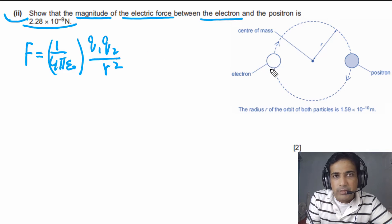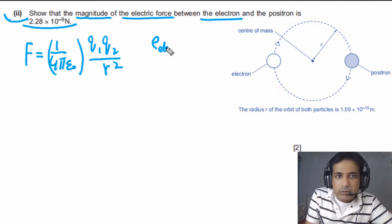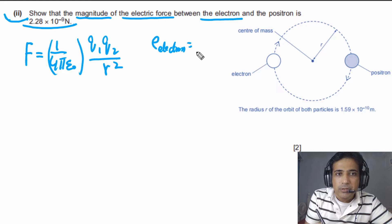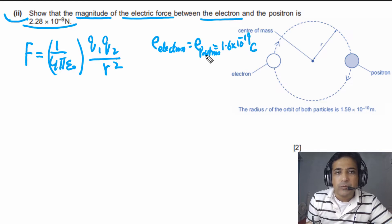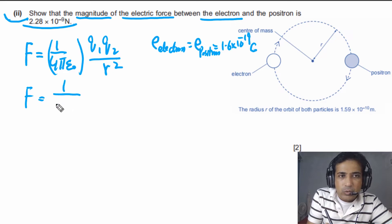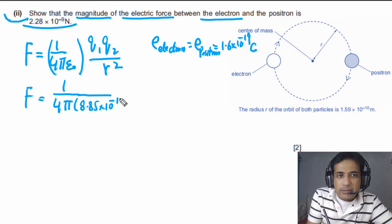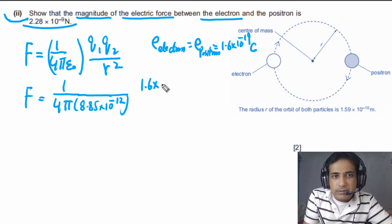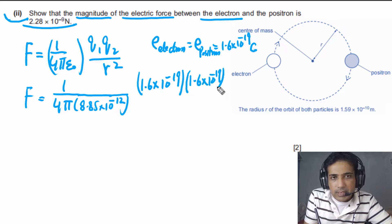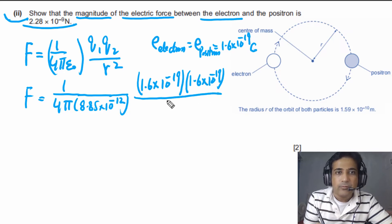The charge on the electron equals the charge on the positron, and both equal 1.6 × 10⁻¹⁹ coulombs. Now we simply plug in values. We have 1 / (4πε₀), where ε₀ = 8.85 × 10⁻¹² — this value can be found in the given data constants. Q = 1.6 × 10⁻¹⁹ C is the magnitude of charge on both the electron and the positron. We are considering magnitudes only, so we just plug in the magnitude value.